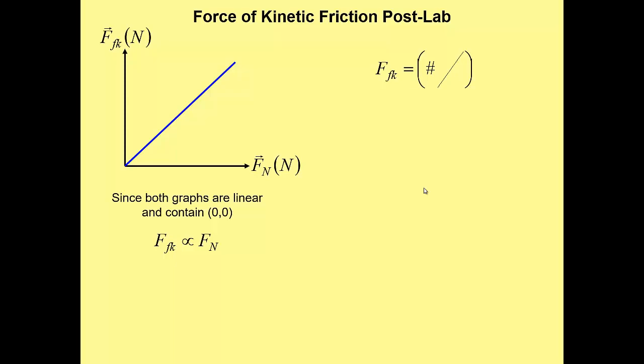Units for this so that we can interpret, rise over run. Units of rise are newtons. Units of run are also newtons. And that's going to do something to our units. But before we do that, let's talk about the for every statement for our slope. Remember, every slope is a rate of change. It's how much one variable changes when you change the other.